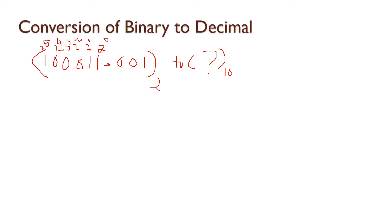For the fraction part, assign negative powers of 2: 2 power of minus 1, 2 power of minus 2, 2 power of minus 3, and so on — corresponding to each fractional binary digit.